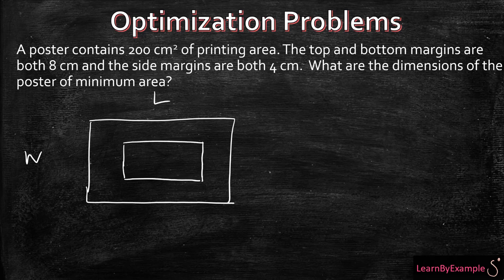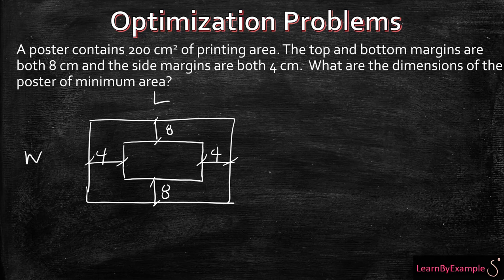So you know the big poster and you know that there is a printing area within that poster. Let's make it look like that. And we know the top and bottom margins are both 8 centimeters and the side margins are both 4.